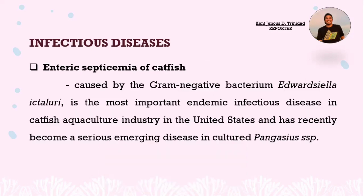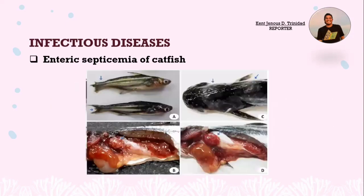The next example is enteric septicemia of catfish. It is caused by the gram-negative bacterium Edwardsiella ictaluri, the most important endemic infectious disease in the catfish aquaculture industry in the United States, and has recently become a serious emerging disease in cultured pangasius species. In the picture, you can observe tail rot, white spots on the head and body, and white spots in the liver.